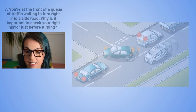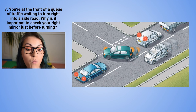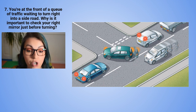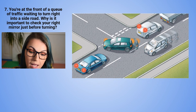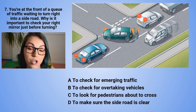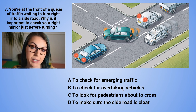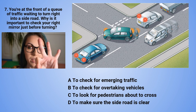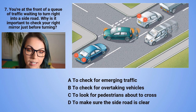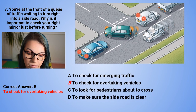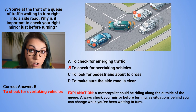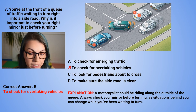Question 7: You are at the front of a queue of traffic waiting to turn right into a side road. Why is it important to check your right mirror just before turning? A. To check for emerging traffic. B. To check for overtaking vehicles. C. To look for pedestrians about to cross. Or D. To make sure the side road is clear. The correct answer is B — to check for overtaking vehicles. A motorcyclist could be riding along the outside of the queue. Always check your mirror before turning, as situations behind you can change while you've been waiting.